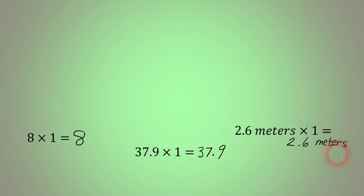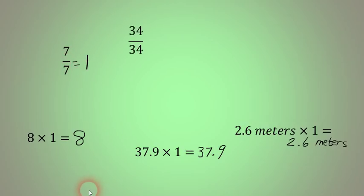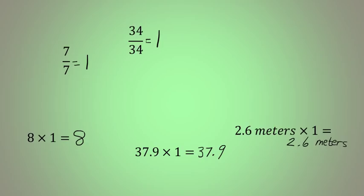Now let's take a look at something that's a little bit different. We're going to look at this fraction. We've talked about what multiplying by 1 does, but hopefully you realize that the fraction 7 over 7 has a value equal to 1. As does 34 over 34. So even though the numbers may be larger, as long as the numerator is the same as the denominator, the value of the fraction is equal to 1.